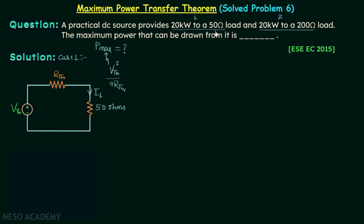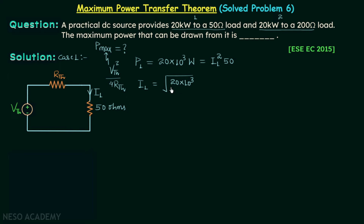The power delivered to the load resistance, P1, is 20 kilowatts. This equals I1 squared multiplied by 50. Solving for I1 gives the square root of 20,000 divided by 50, which is 20 amperes. Applying KVL in this loop gives I1 equal to Vth divided by the quantity Rth plus 50. So 20 equals Vth divided by Rth plus 50. This is equation number 1.